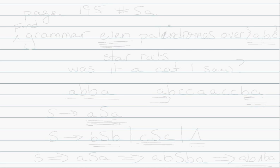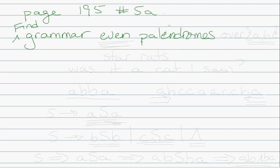Let's do one more problem from Heinz's Discrete Structures book. This time we're going to do page 195, number 5A. We need to find a grammar for even palindromes over the alphabet A, B, C.